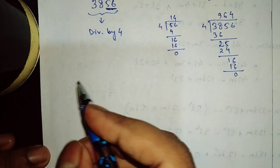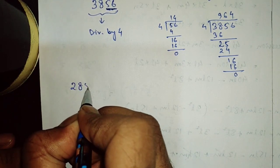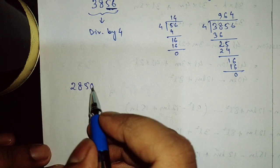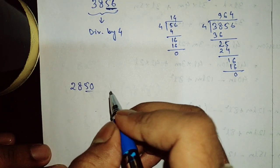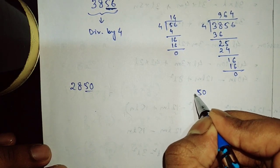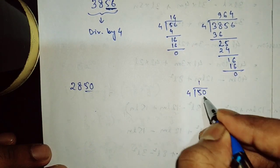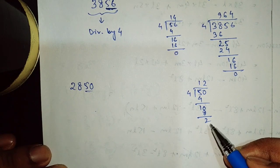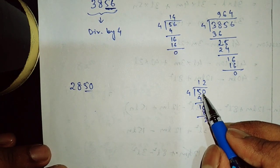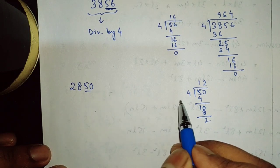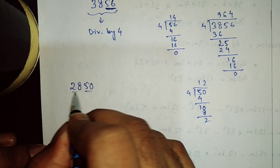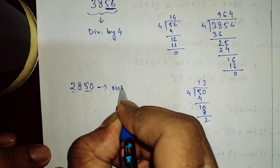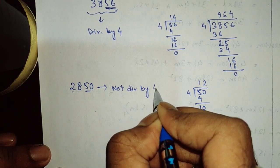Similarly, take another example: 2850. In this number 2850, we will check whether 50 is divisible by 4 or not. Dividing 50 by 4: 4 times 12 is 48, remainder is 2. That means 50 is not divisible by 4, so this whole number 2850 is not divisible by 4.